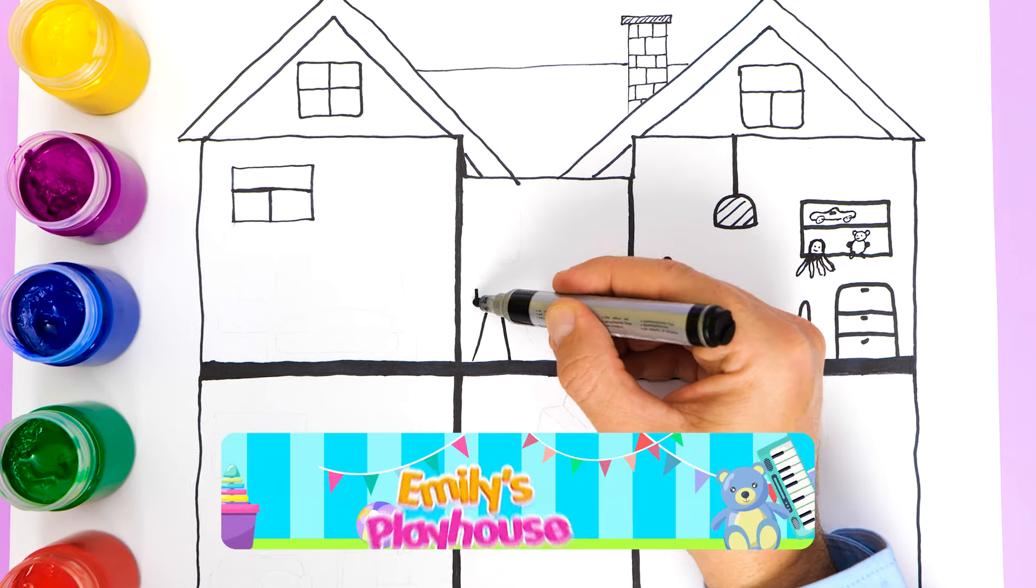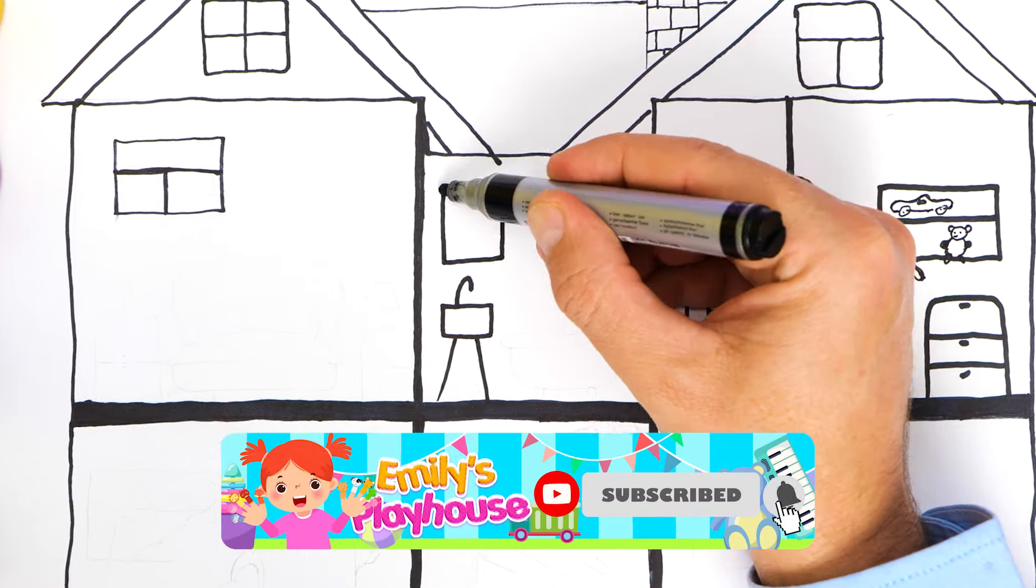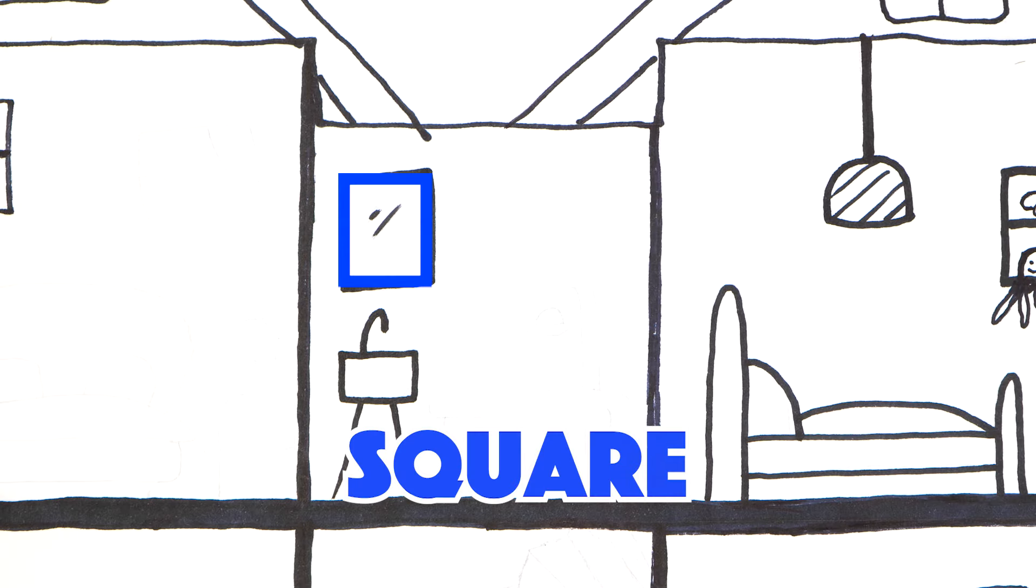Let's move on to room number two. The bathroom is located here. Do you see any shapes? It's a square again. Correct!